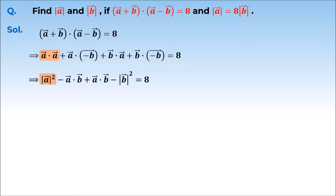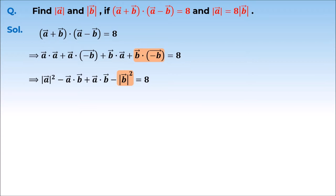A vector dot minus B vector gives minus A vector dot B vector. B vector dot A vector equals A vector dot B vector. And B vector dot minus B vector gives minus magnitude of B vector squared. Simplifying, we get magnitude of A vector squared minus magnitude of B vector squared equal to 8.